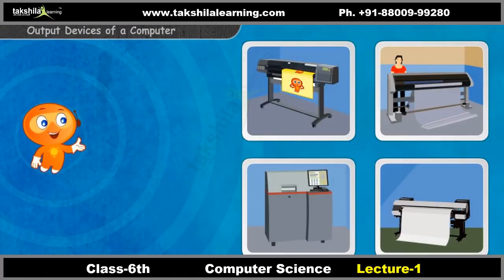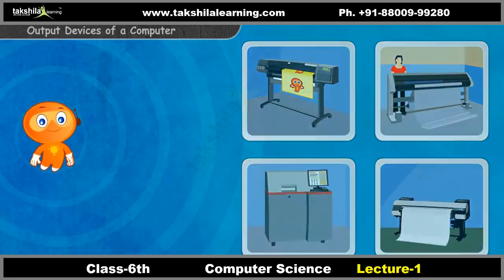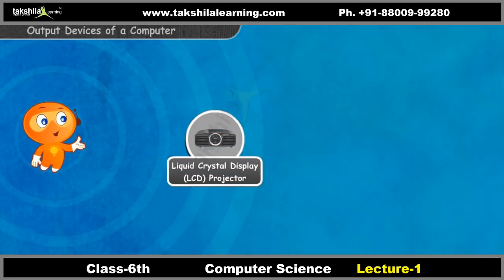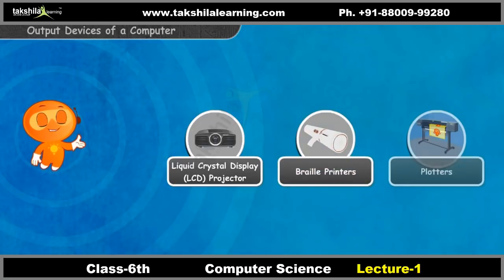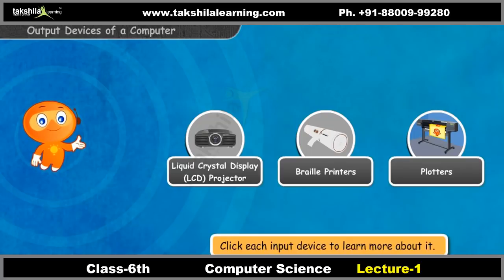Let us now look at some of the output devices that help users to get information from the computer. Liquid crystal display, or LCD projectors, braille printers, and plotters are some of the output devices. Click each device to learn more about it.